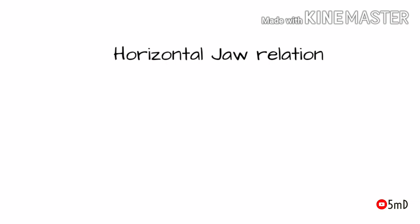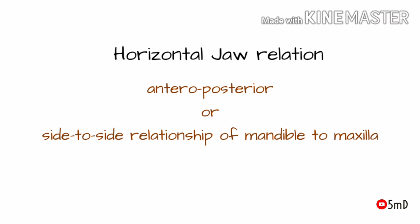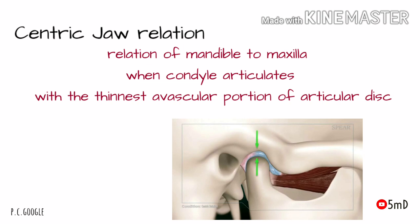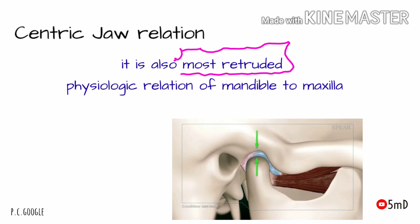Today let us see about horizontal jaw relation. By definition, it is the anteroposterior and side-to-side relationship of the mandible to the maxilla in the horizontal plane. The horizontal relation can be either centric or eccentric. Centric relation is that relation of the maxilla and mandible when the condylar part of the mandible articulates with the thinnest avascular portion of the articular disc.